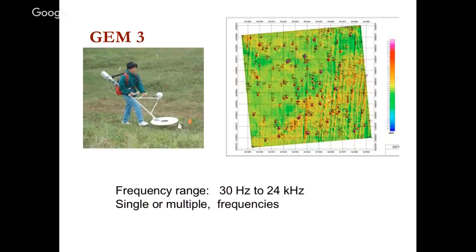There are other systems too. This is another frequency domain system called a GEM system — it's more like the metal detector you take along the beach. There's a transmitted coil and a receiving coil operating at a particular frequency. You can go over an area and get a map that looks something like this — in this case looking for unexploded ordnance. You get signals that are first-order reminiscent of what we saw with magnetics, looking like dipoles.